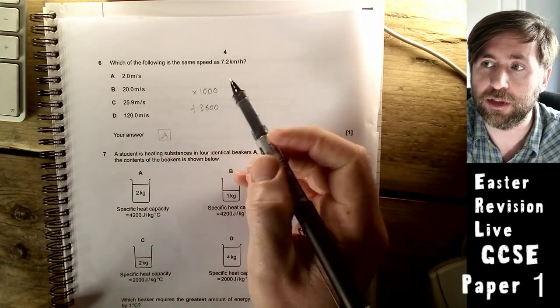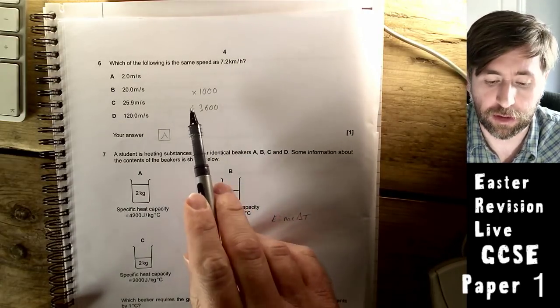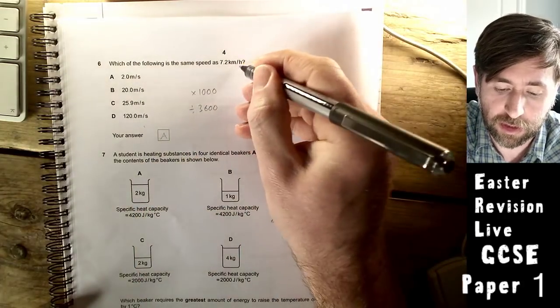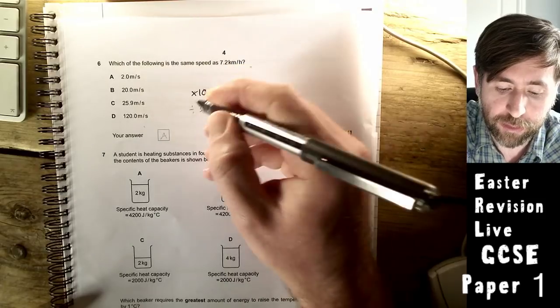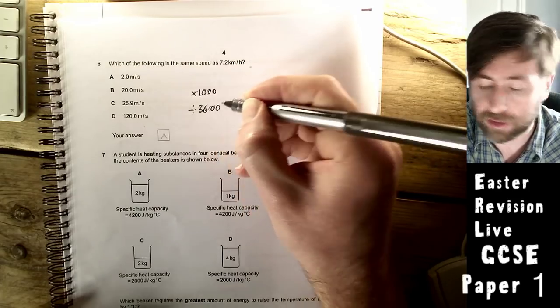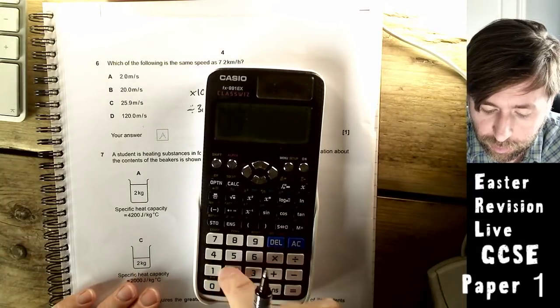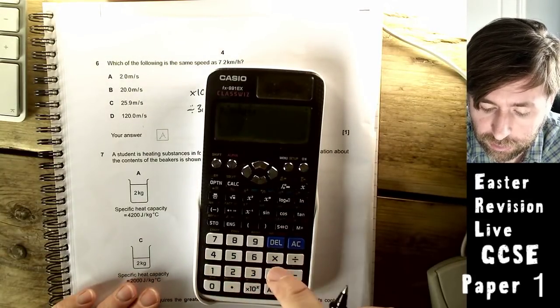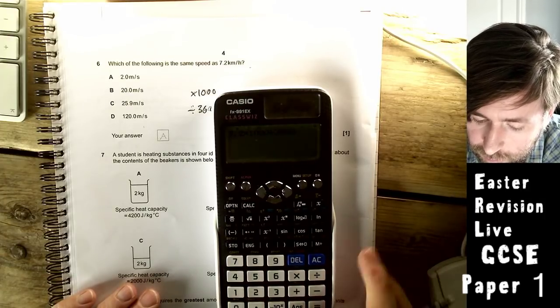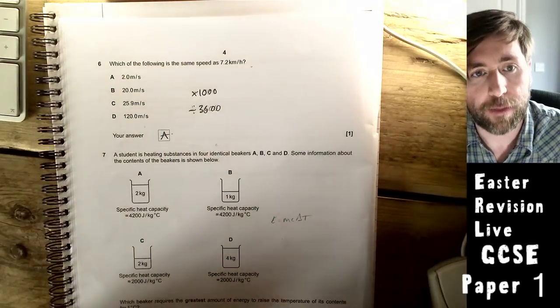Which of the following is the same speed as 7.2 kilometers per hour? We're converting kilometers per hour into meters per second. To do that, you take the prefix, times by a thousand, that's the kilo, and you divide by the number of seconds in an hour, which is 3,600. So 7.2 times a thousand divided by 3,600, boom, two. So the answer is A.